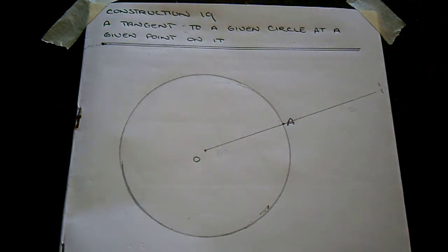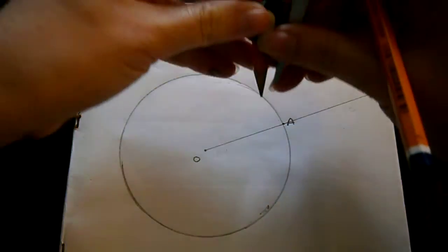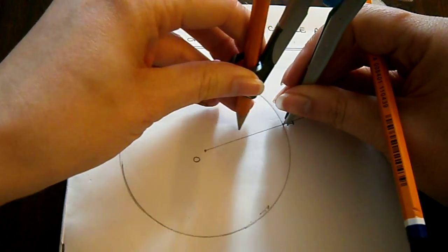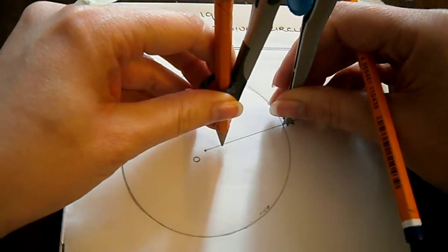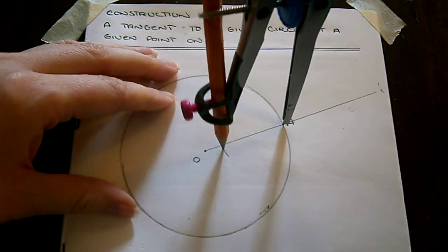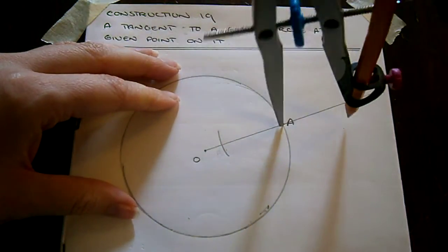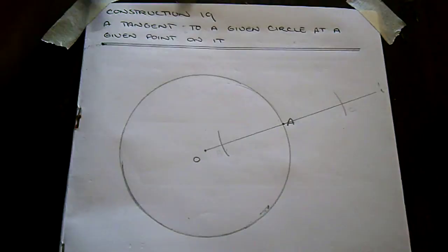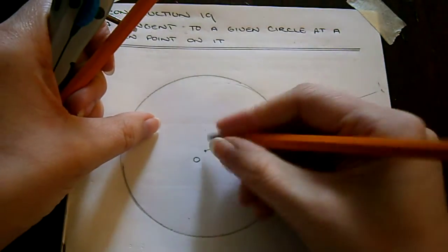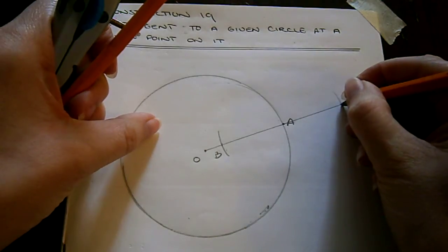Then take a compass and extend it out, keeping the compass point on A. Extend it in the direction towards O and draw an arc on either side. Let's call these points of intersection B and C.